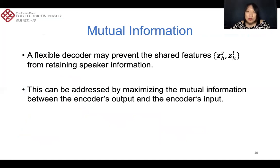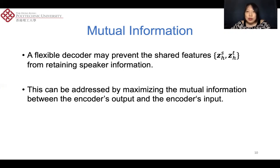One potential risk of these models is that the features produced by the shared encoder may not contain enough task-related information — in our case, speaker information. This would happen especially when the decoder is flexible enough. However, this can be addressed by maximizing the mutual information between the encoder's input and output.